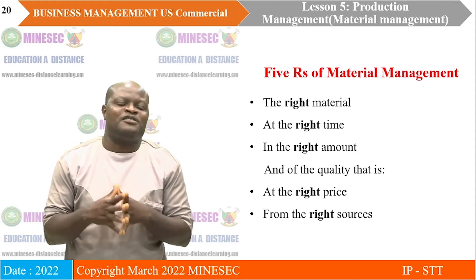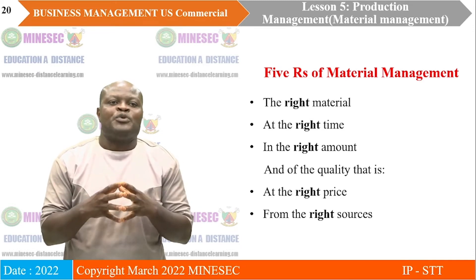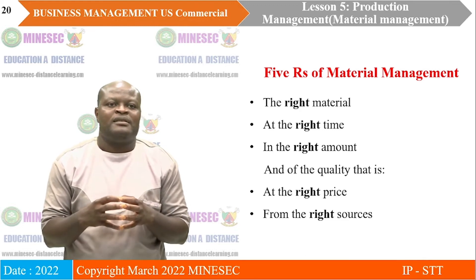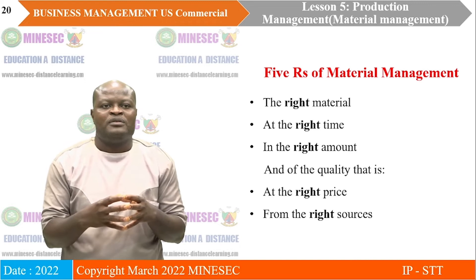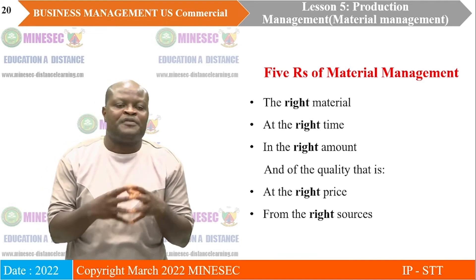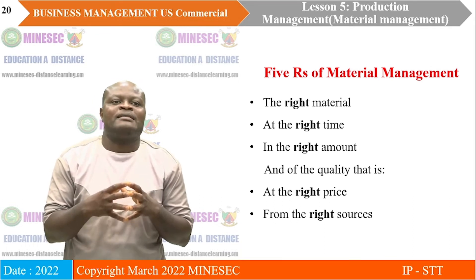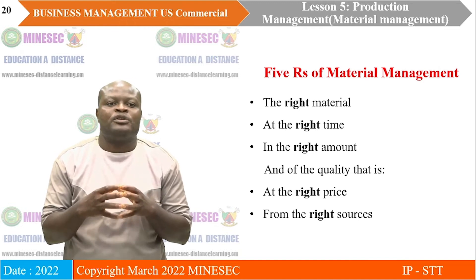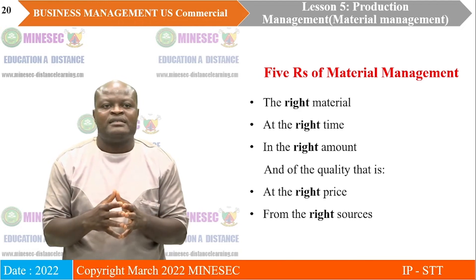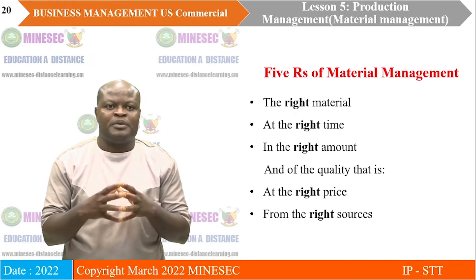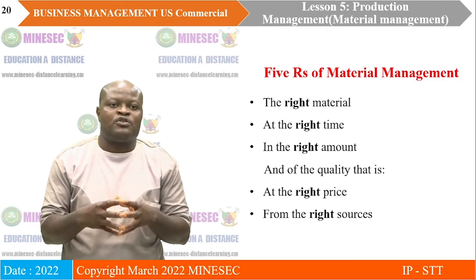The five R's of material management: we must master these five elements. First, we need to get the right material — we must ensure it is suitable for the particular product we are producing. That material should arrive at the right time, be produced in the right amount or quantity, ensure the right quality in terms of price, and come from the right source. So the five R's are: right material, right time, right amount, right quality, and right source.